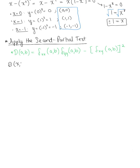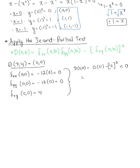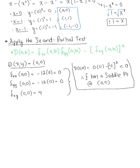Case 1: the potential critical point (0, 0). The second order partial of x with respect to x at (0, 0) is negative 12 times 0, which equals 0. The second order partial of y with respect to y at the origin also equals 0. The second order partial of x with respect to y at the origin equals 4. Plugging into the discriminant formula: 0 times 0 minus 4 squared, which is negative — less than zero. Therefore, f has a saddle point at the origin.